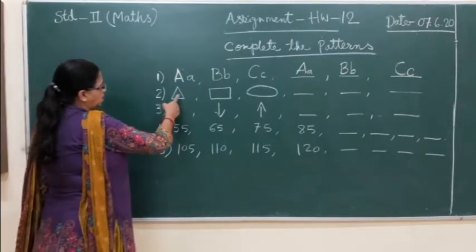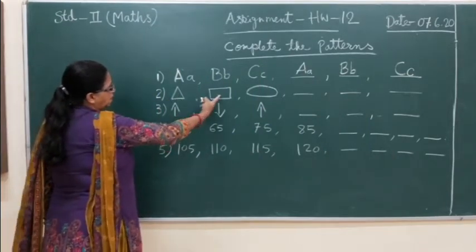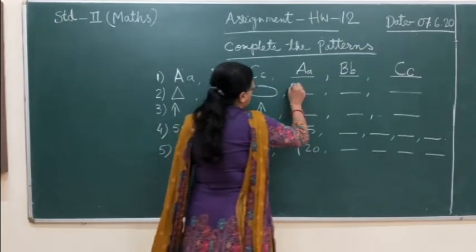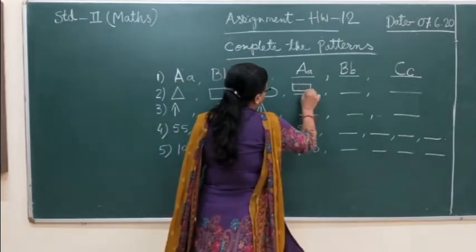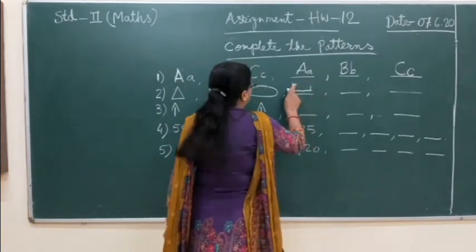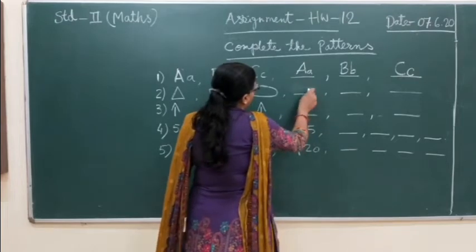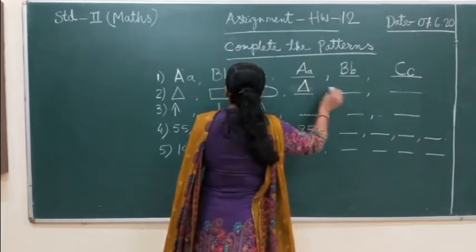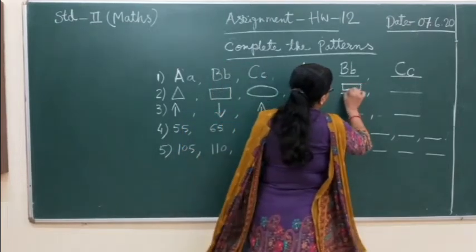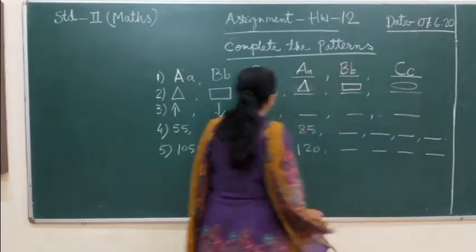See here, first one: triangle, rectangle, oval. Again: triangle, circle, triangle, rectangle, and oval. Okay.